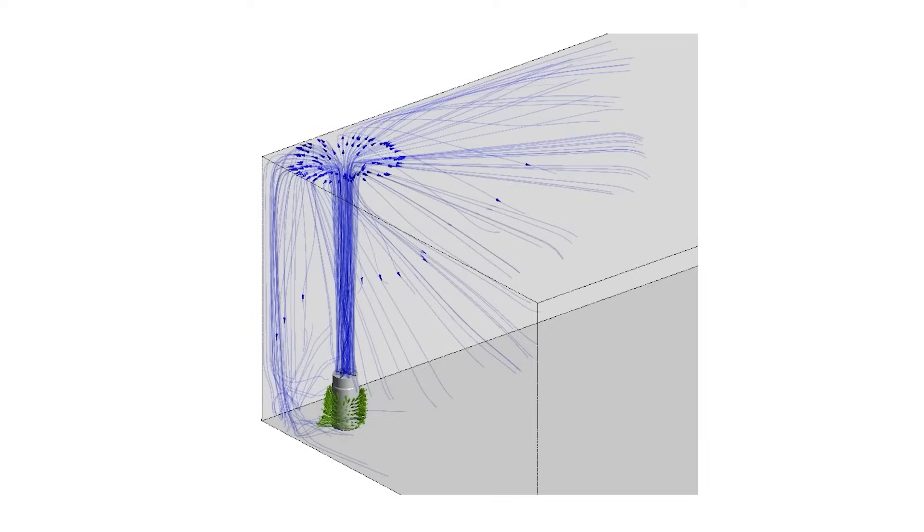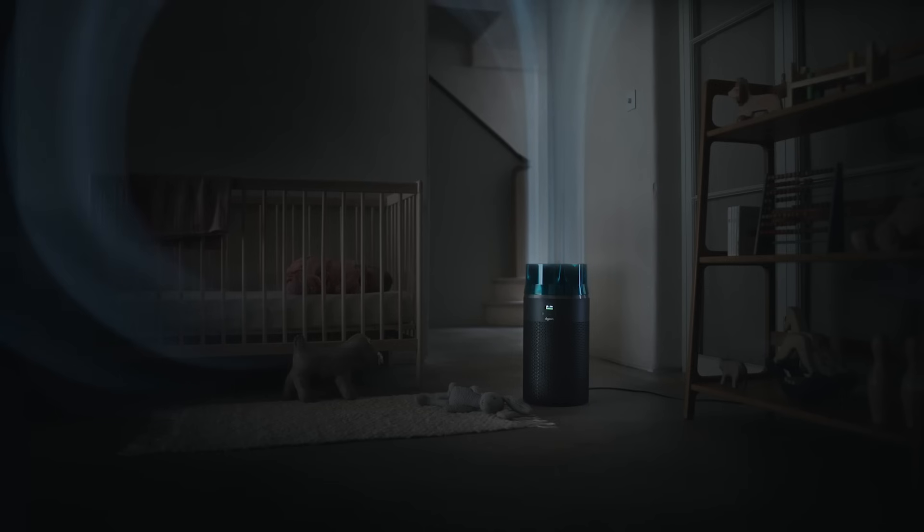Hushjet projects the air vertically, giving you maximum air purification performance within your whole room with minimum disturbance.